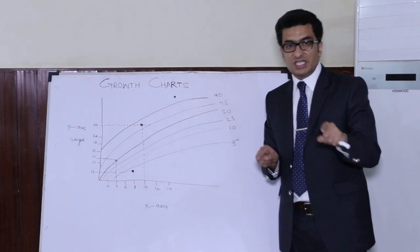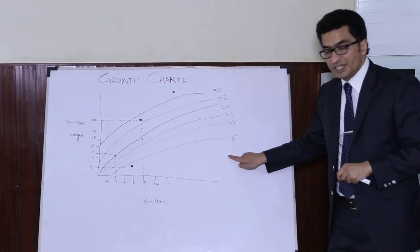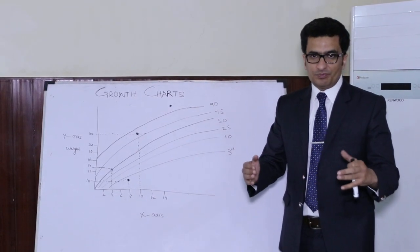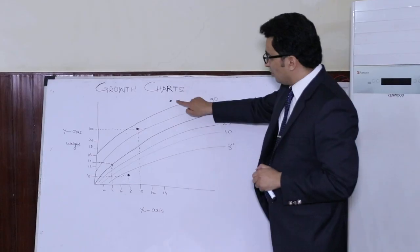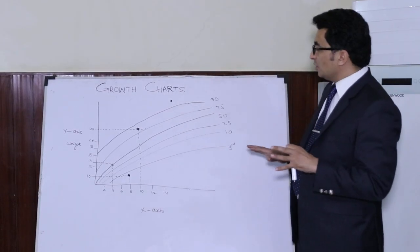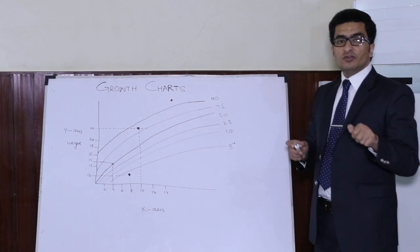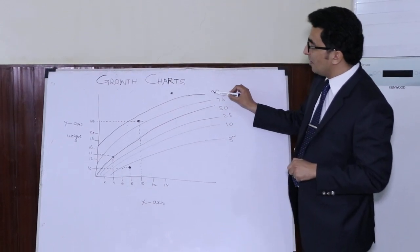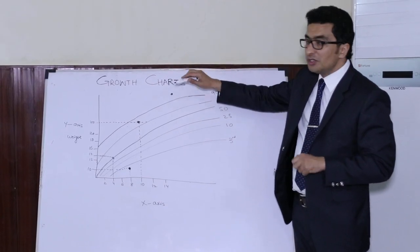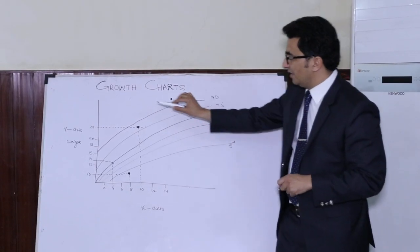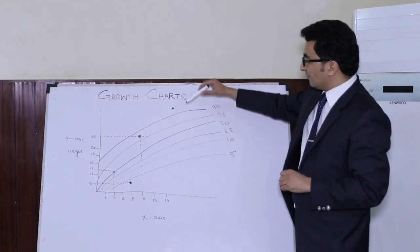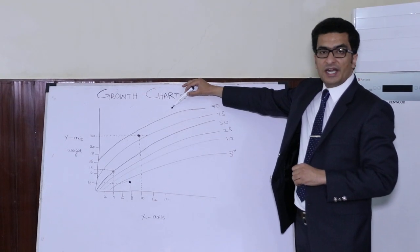Now let's suppose you have an obese child whose weight plots above the upper centile lines. After putting dots from the age and weight points, the final dot falls above the 90th centile line. So you will say that the weight of this obese child lies above the 90th centile.